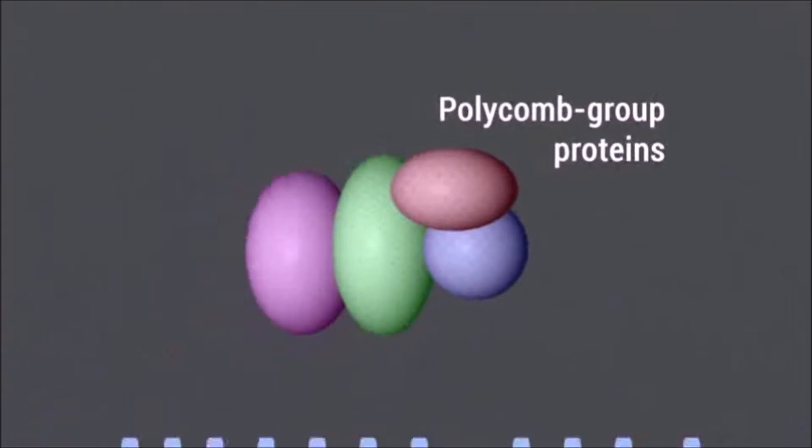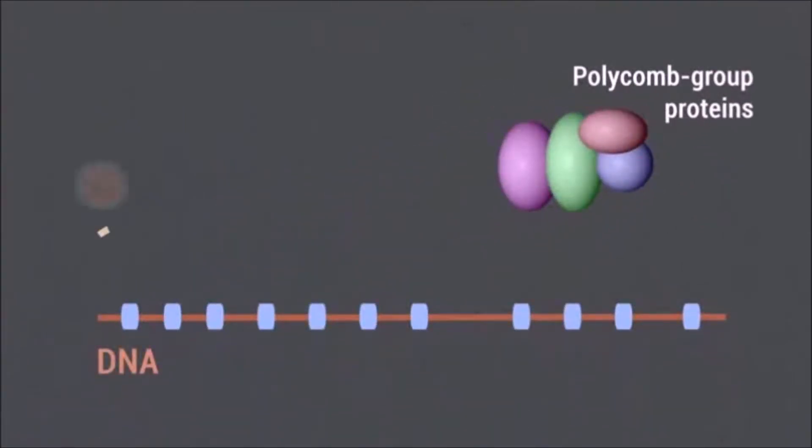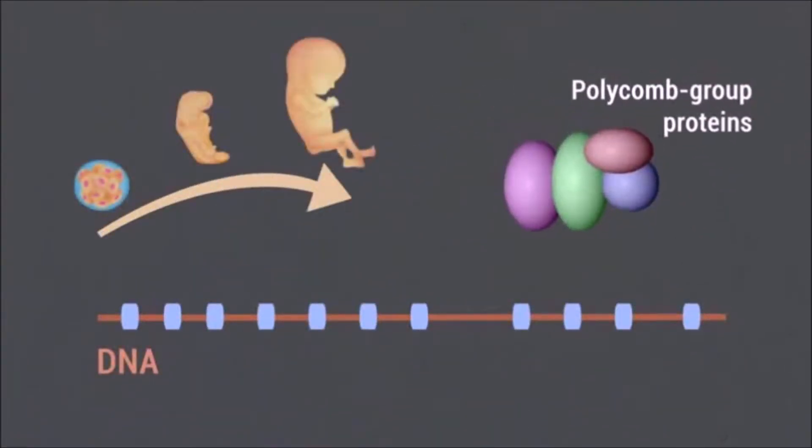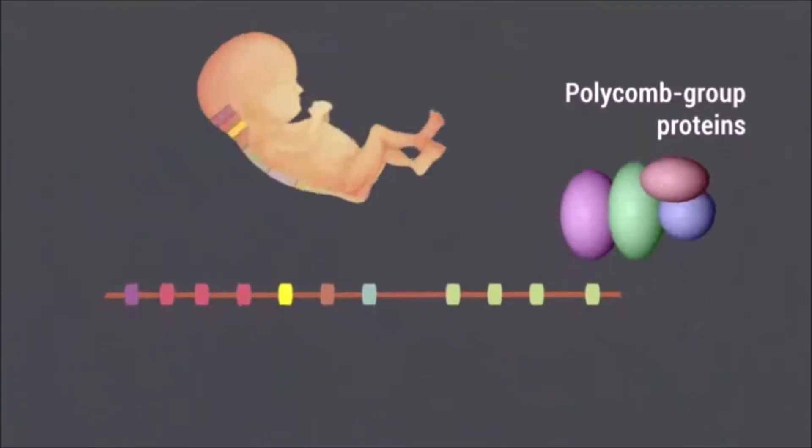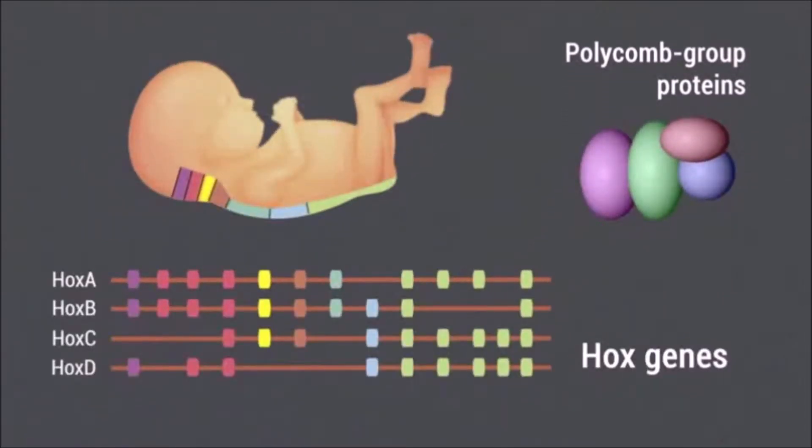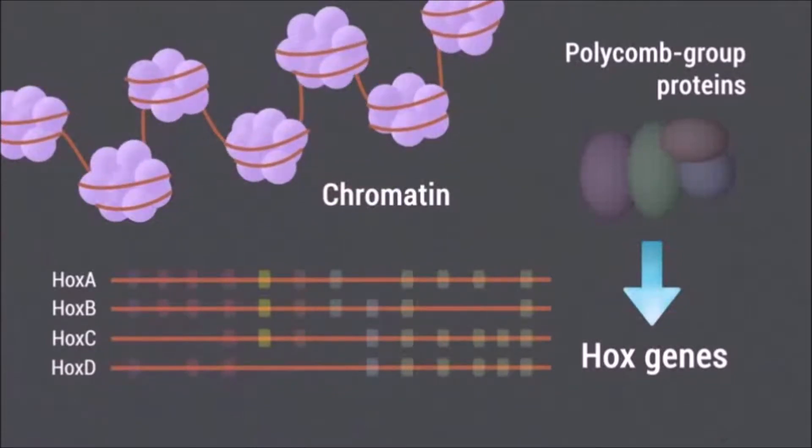Polycomb group proteins are conserved epigenetic components essential for cell differentiation, which maintain gene silencing during development. Hox gene clusters are the best characterized Polycomb group targets, and the loss of Polycomb group proteins affects both Hox gene expression and chromatin compaction.